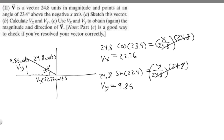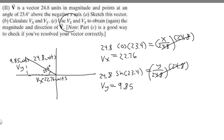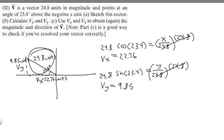So we've solved for V sub x and V sub y. V sub y is 9.85 and V sub x is negative 22.76. Now what we want to do is, since we found these two values, find the magnitude and direction of V to verify. We already know what it is — we're just using it to check, which is what the problem wants us to do.